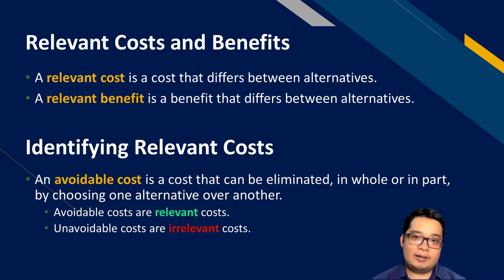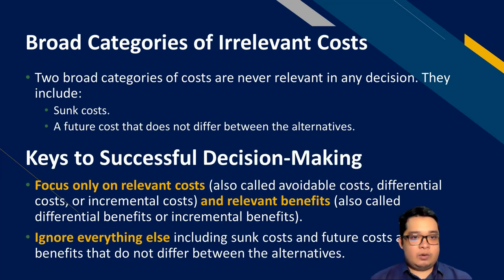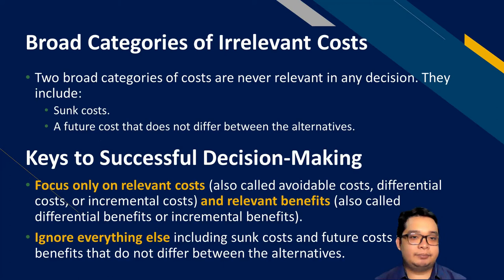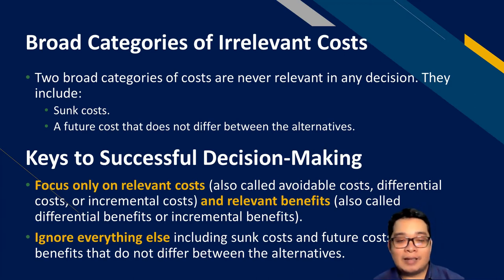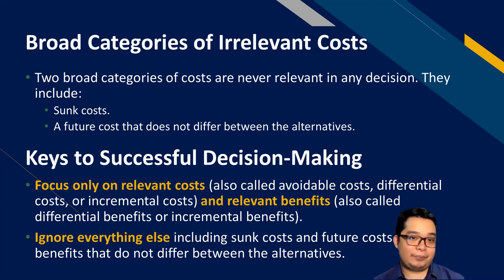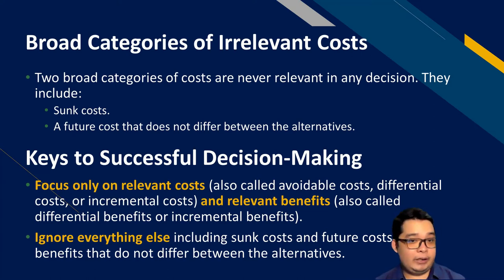Identifying relevant versus irrelevant costs simplifies our decision making, because by eliminating irrelevant items, you focus on what's relevant. There are two broad categories of irrelevant costs. First, sunk costs are irrelevant — regardless of doing option A or option B, the money has already been spent. Whether you pursue option A or B, it doesn't matter because under both options you have spent that amount. Second, future costs that do not differ between alternatives — and are therefore unavoidable — are also irrelevant.